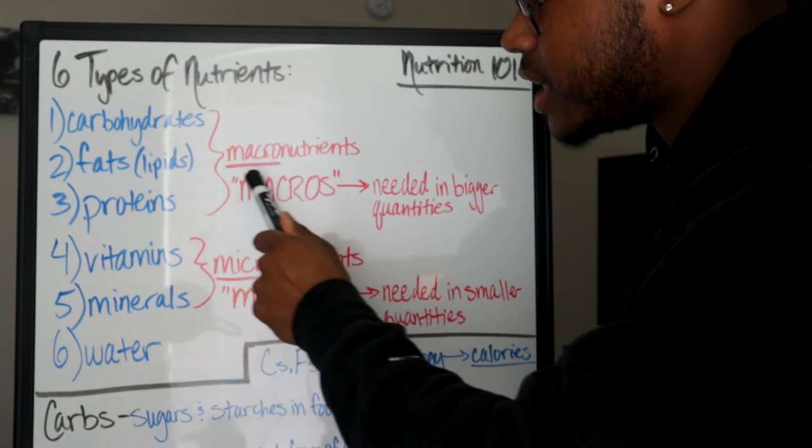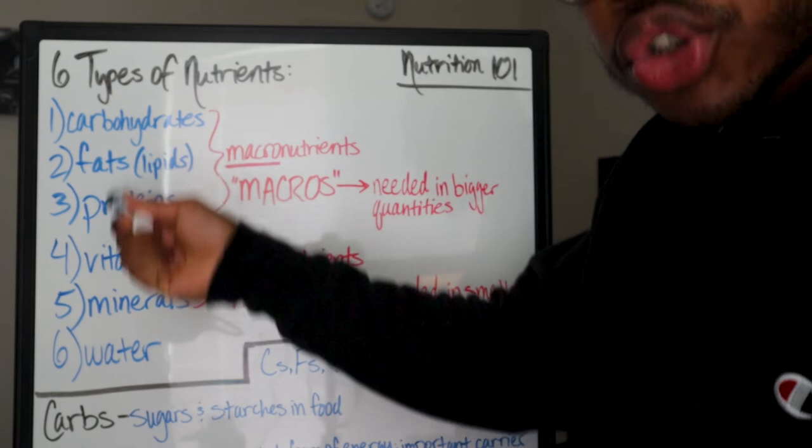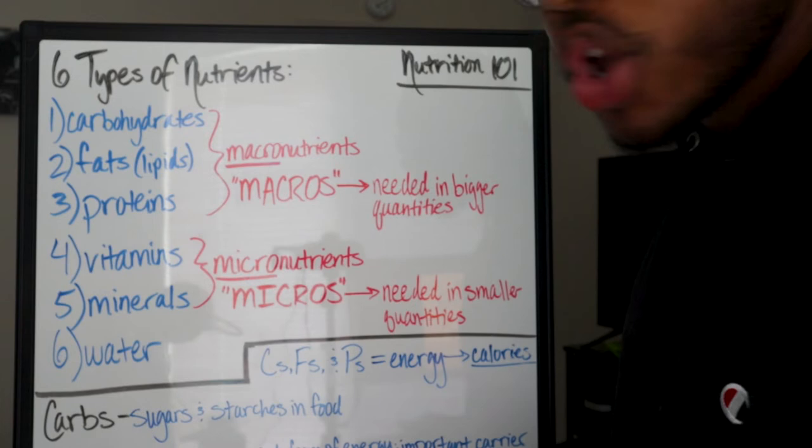Now we have carbs, fats, and proteins. If you've delved into exercise, fitness, and health at all, you've probably heard these three words because these three words are what are considered your macronutrients. So when you hear the word macros, it's for macronutrients. Why are they called macronutrients? Because these three nutrients are required in much bigger quantities.